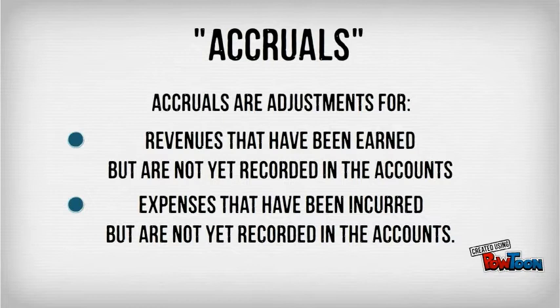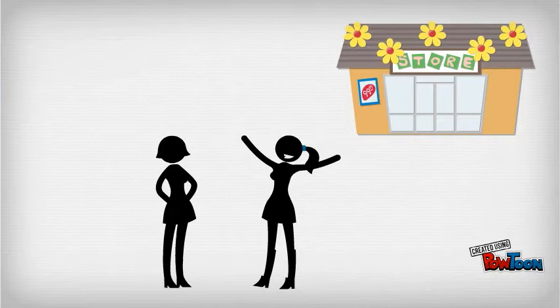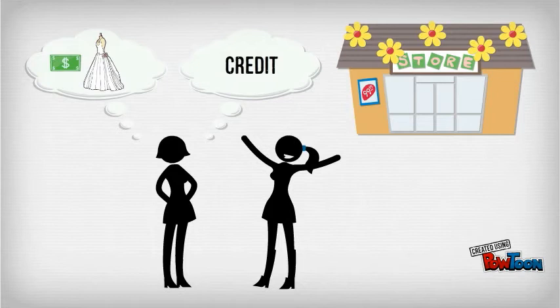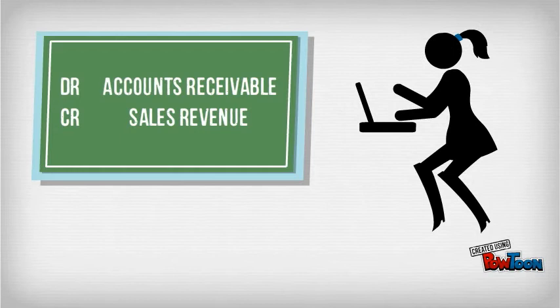For example, accounts receivable and accounts payable. Let's look at Jenny. Jenny, having her flower shop, is selling flowers to Priscilla. Priscilla is about to get married and wants some really nice flowers to cheer up her wedding day. She buys the flowers on credit, since she's already spent all her cash on a beautiful dress. Jenny will therefore create the following journal entry. This is an example of accrual accounting.